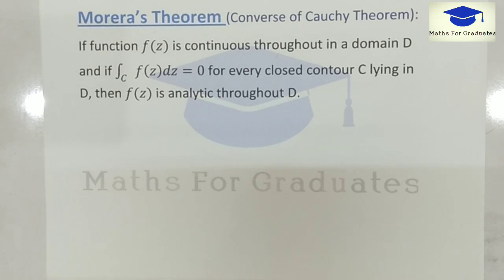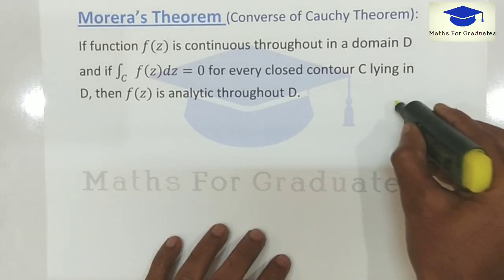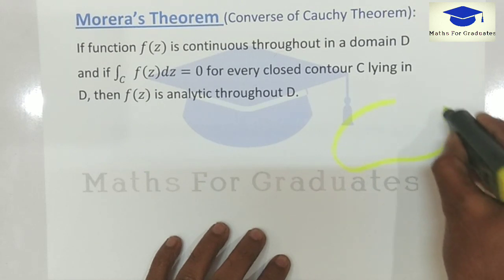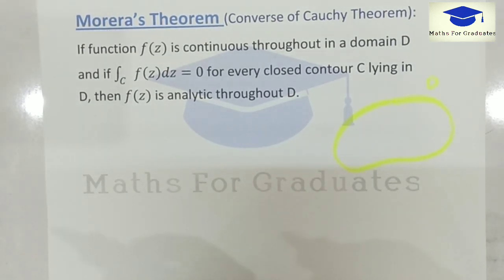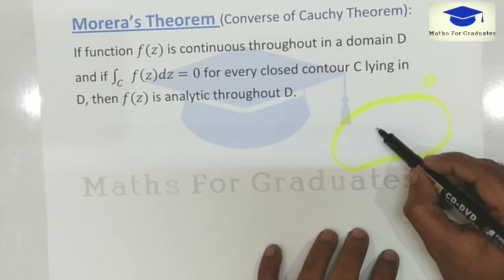If any complex function f is continuous in a domain D, we have a domain D here, and inside this domain there is some contour C.